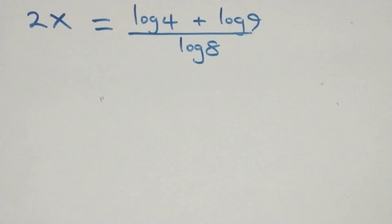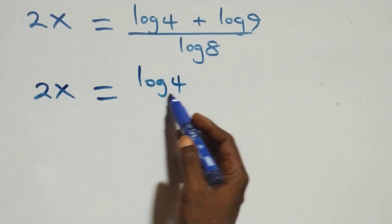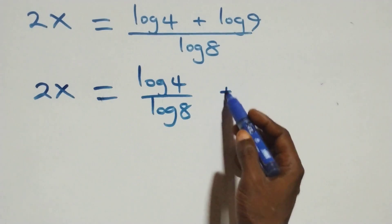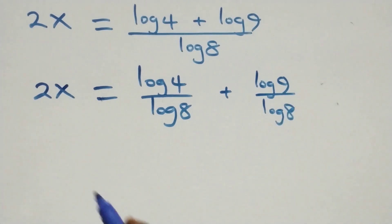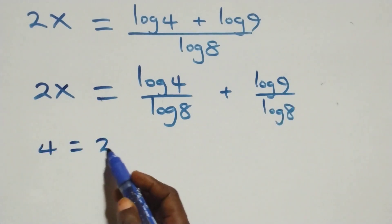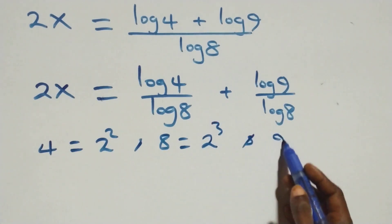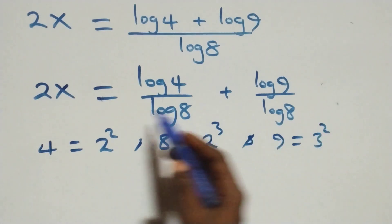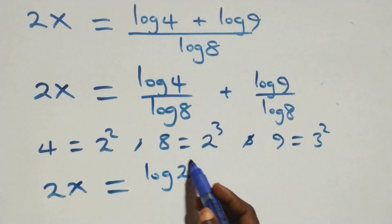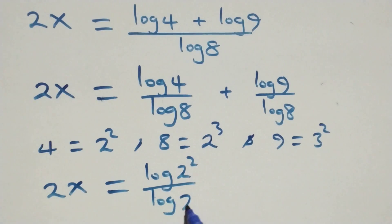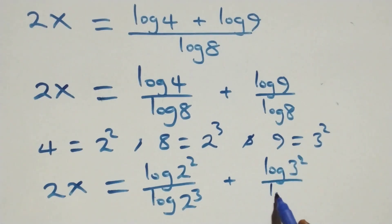We separate this into two fractions and have 2x equals log 4 over log 8 plus log 9 over log 8. We can write 4 as 2 times 2, which is 2 squared; 8 as 2 times 2 times 2, which is 2 cubed; and 9 as 3 times 3, which is 3 squared. So 2x equals log(2 squared) over log(2 cubed) plus log(3 squared) over log(2 cubed).